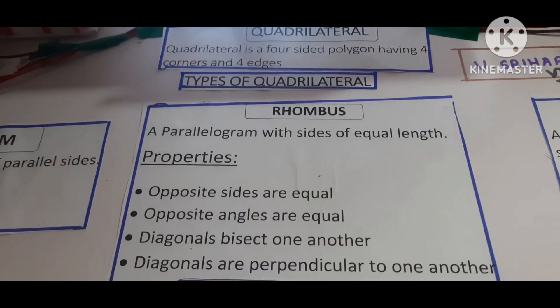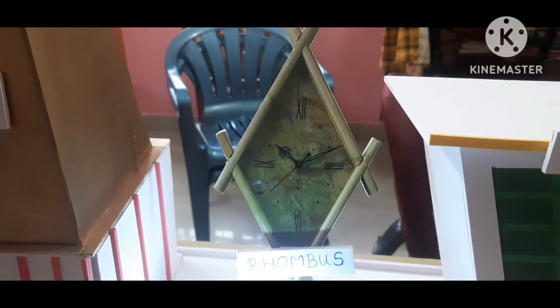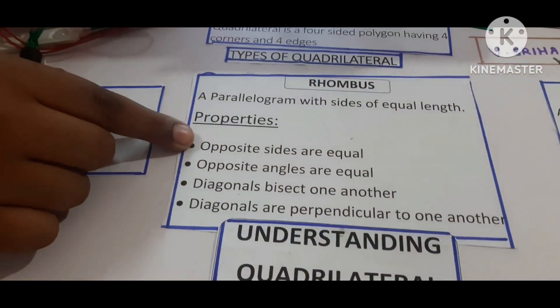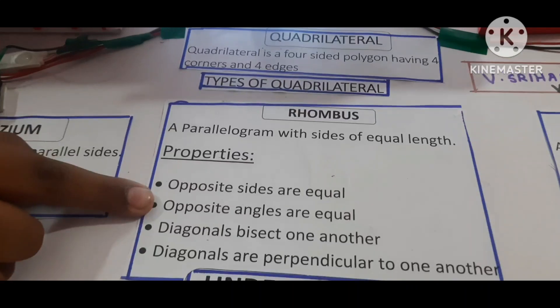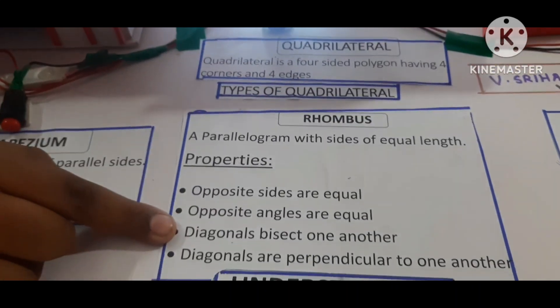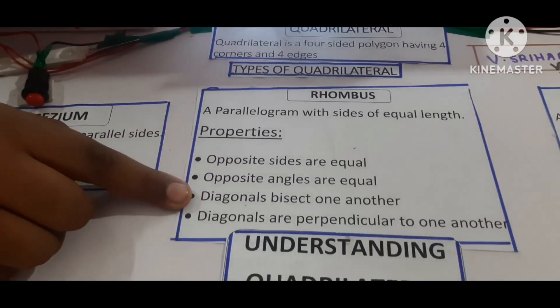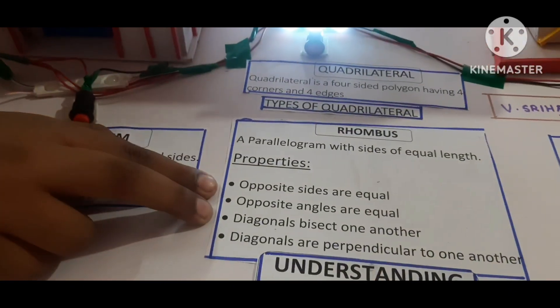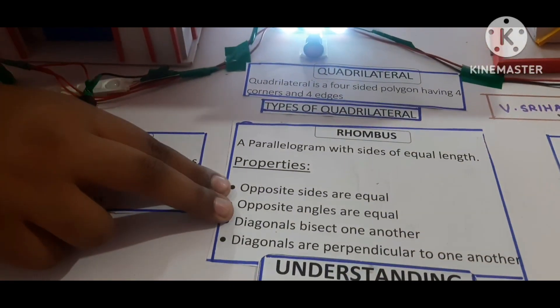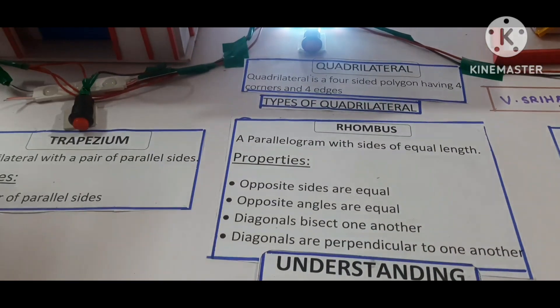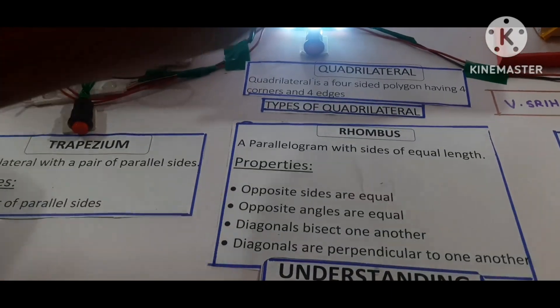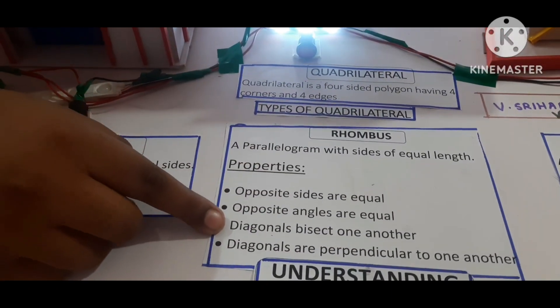This is the properties of the parallelogram. Opposite sides are equal. Opposite angles are equal. Diagonals are perpendicular. These are the properties.